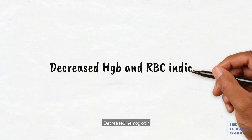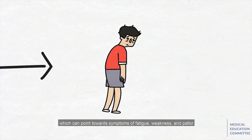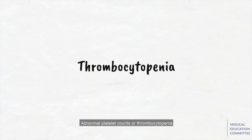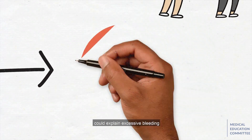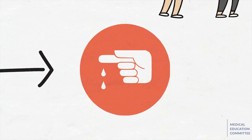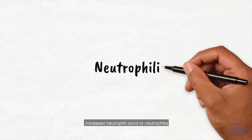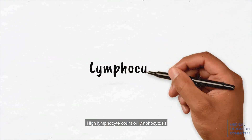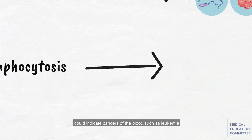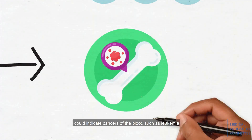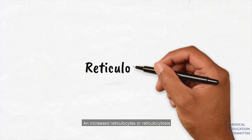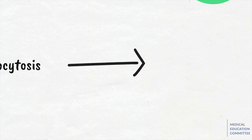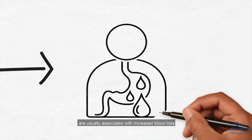Common findings and their correlations include decreased hemoglobin, which can point towards symptoms of fatigue, weakness, and pallor. Normal platelet counts or thrombocytopenia could explain excessive bleeding. Increased neutrophil count or neutrophilia points towards infection. High lymphocyte counts or lymphocytosis could indicate cancers of the blood such as leukemia. And increased reticulocytes or reticulocytosis usually associate with increased blood loss.